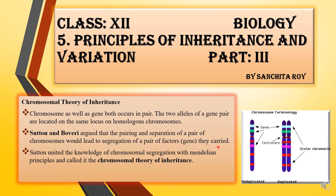The way Mendel said that during gamete formation the genes get segregated randomly, similarly Sutton and Boveri also said that during gamete formation the chromosomes get segregated — they will get separated and transformed into the gametes. Sutton united the knowledge of chromosomal segregation with Mendelian principles and called it the chromosomal theory of inheritance, adding that genes are randomly segregated during gamete formation.